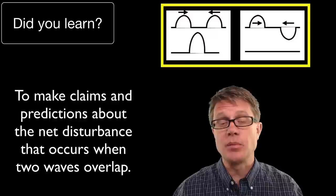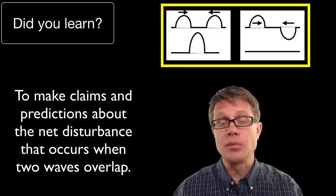And so did you learn to make claims about what happens when waves overlap? Remember they go through each other but they can interfere. And then finally could you look at a representation and figure out points when they are adding and when they are subtracting from each other? I hope so. And I hope that was helpful.